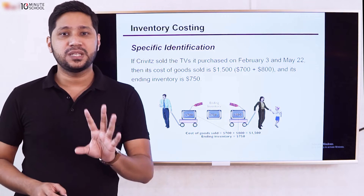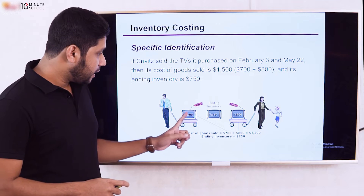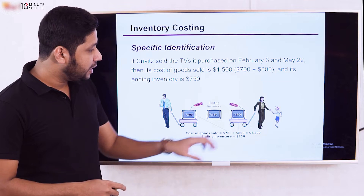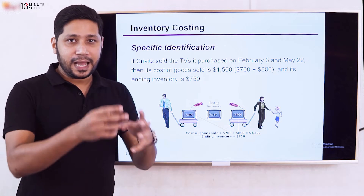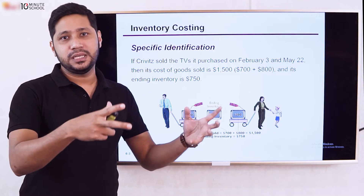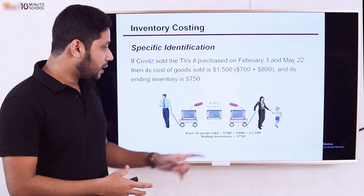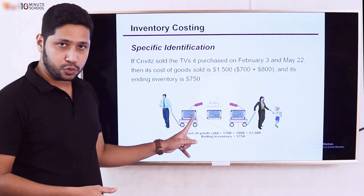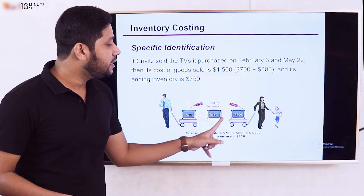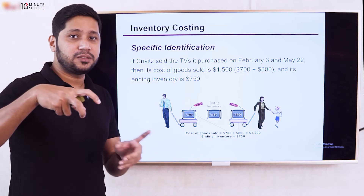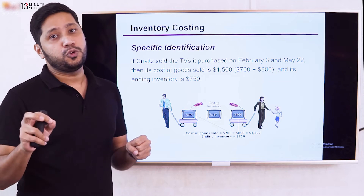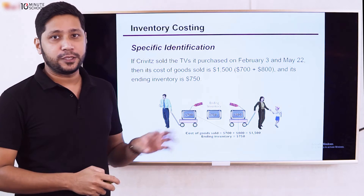With specific identification, we can track each customer's specific item. We have three TVs that look the same, but they are not all the same price. TVs, fridges, and luxury goods are items where specific identification is applicable, because the customer is deliberately choosing a specific unit. This is the specific identification method.